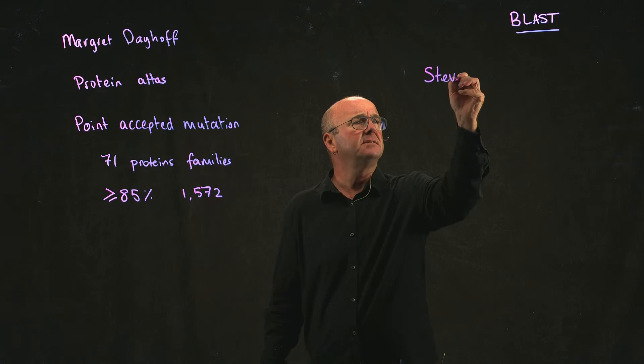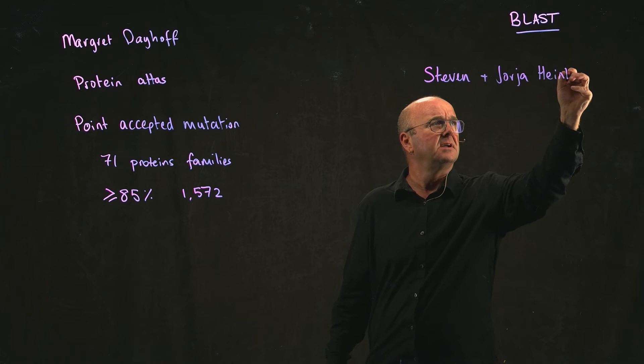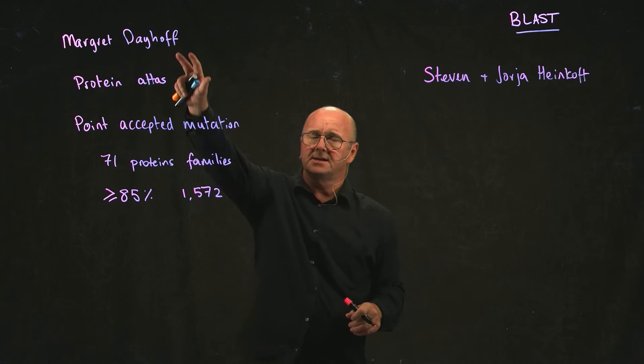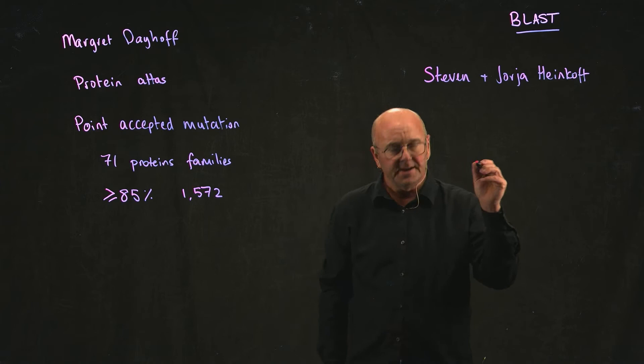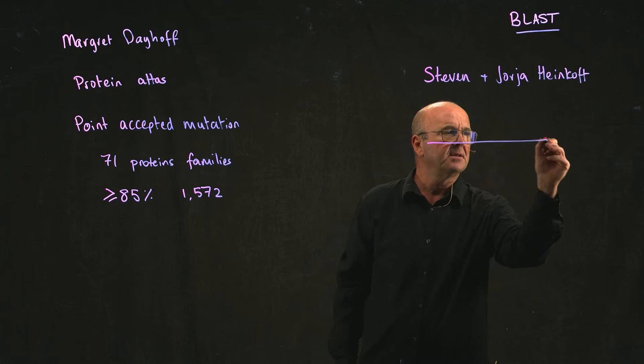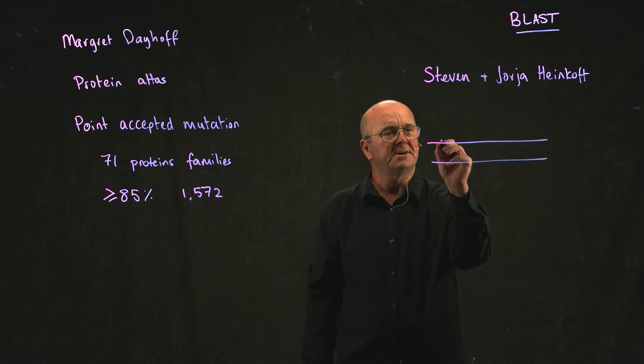A little bit later, Stephen and Georgia Henikoff. Margaret Dayhoff did this starting in the 1970s, but really carried on for a very long time studying this phenomenon. The Henikoffs did this starting in 1992, and they took a slightly different approach, which was to take protein alignments, and what we haven't really talked about yet, but we will get to.